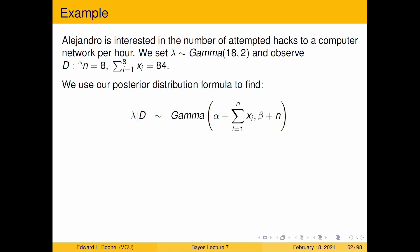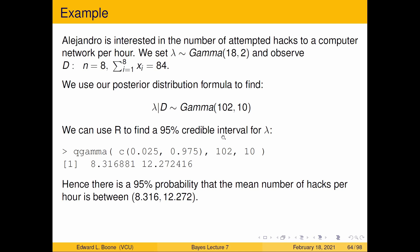We now have all the pieces: the prior parameters alpha equals 18 and beta equals 2, n equals 8, and the sum of the xi equals 84. Plugging into the posterior formula gives Gamma(102, 10). To get a 95% credible interval for lambda, we use qgamma in R, grabbing the 0.025 quantile and the 0.975 quantile from Gamma(alpha=102, beta=10).